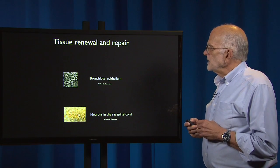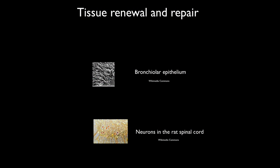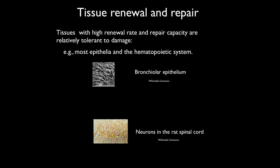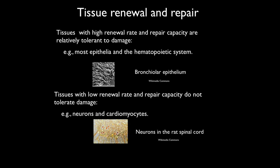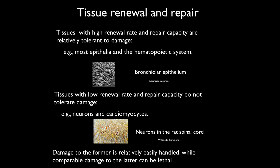Let's consider tissue renewal and repair. Here we have a picture of a bronchial epithelium and some neurons in the rat's spinal cord. These have different properties. Tissues that have a high renewal rate, like the bronchiolar epithelium, also have a high repair capacity and they're pretty tolerant to damage. That's true of most epithelia and the hematopoietic system. On the other hand, tissues that have a low renewal rate and a low repair capacity do not tolerate damage — that includes neurons and cardiomyocytes. Damage to tissues with a high renewal rate is easily handled, whereas comparable damage to neurons and cardiomyocytes can be fatal.